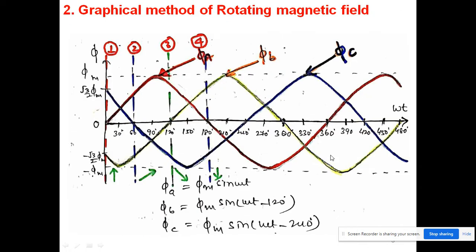Now we will discuss the second method, known as the graphical method of rotating magnetic field. Because of the three-phase supply we get three AC fluxes: the first flux is phi_a = phi_max * sin(ωt), the second is phi_b = phi_max * sin(ωt − 120°) because it lags by 120°, and the third is phi_c = phi_max * sin(ωt − 240°) because it lags by 240°. We will draw these fluxes graphically and check the magnitude and direction at four points.